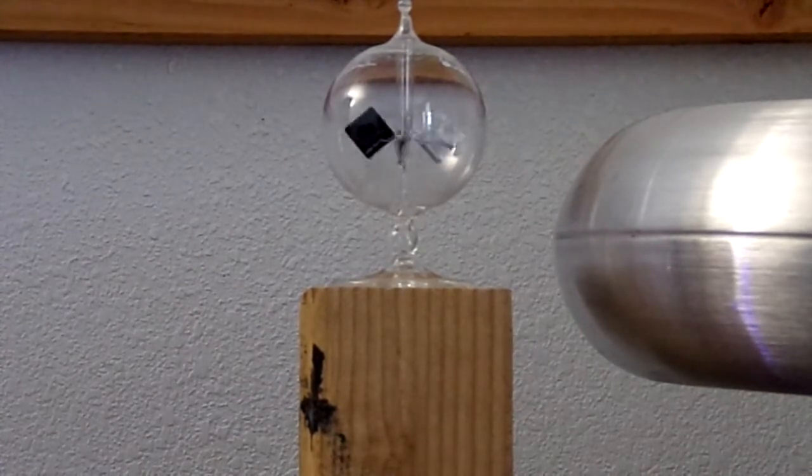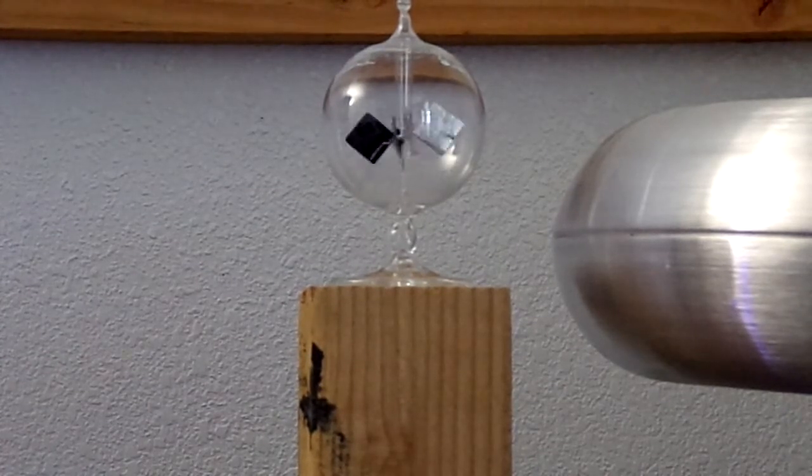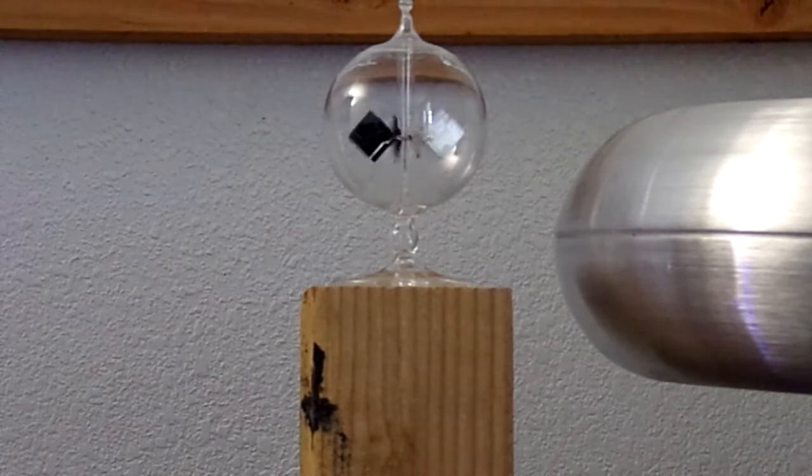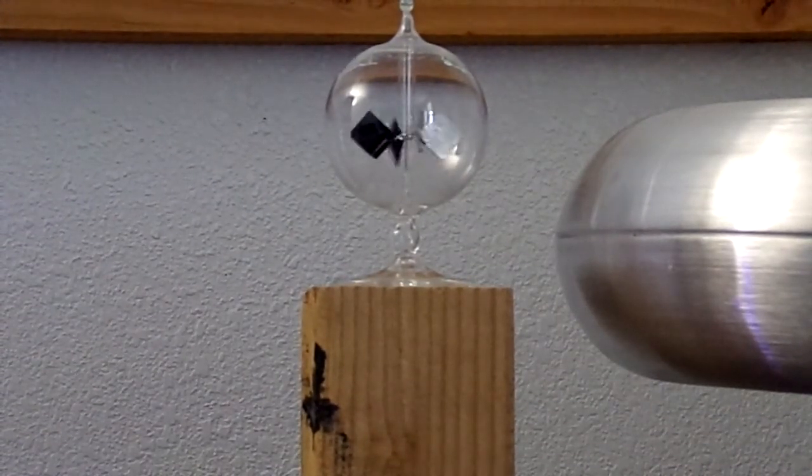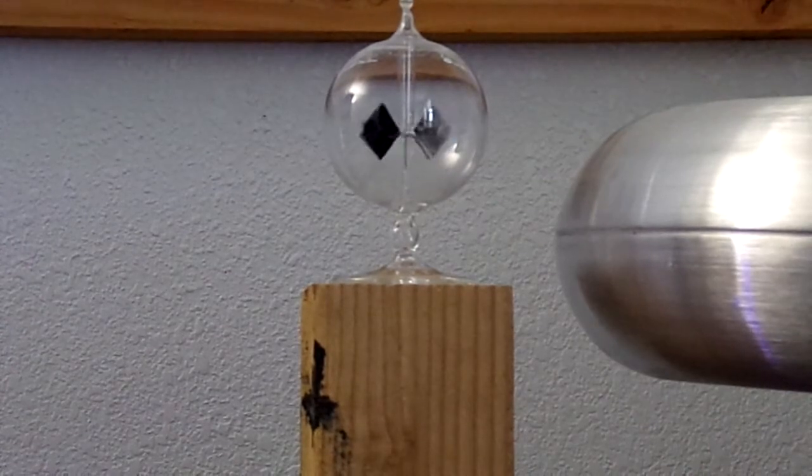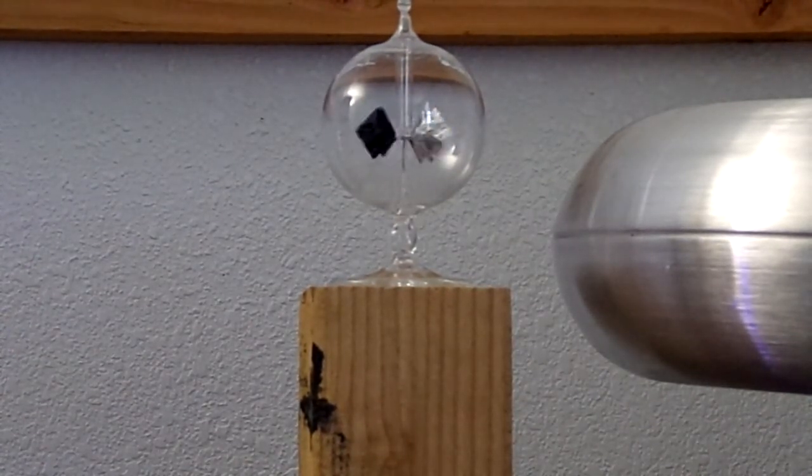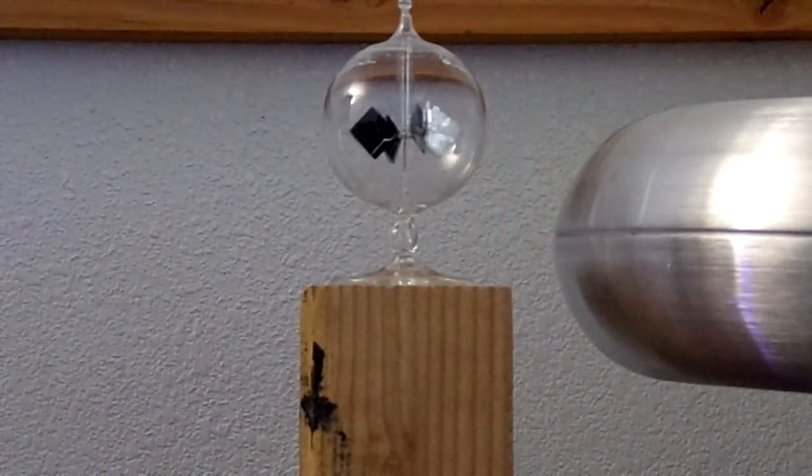So based on this, the Tesla top load could be creating a wave similar to the sun that's not based on infrared heat causing the vanes to spin. Obviously there's some other type of wave that's potentially coming off the top of this Tesla coil. So thanks for watching.